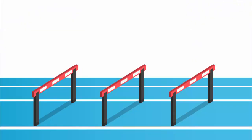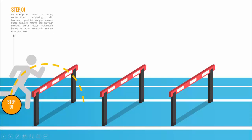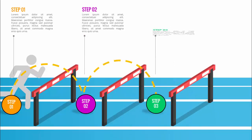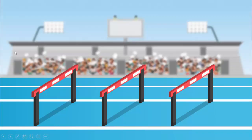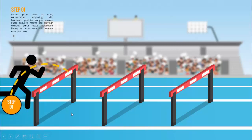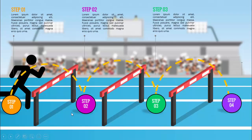In today's tutorial I'm going to show you how to make a hurdle race infographic slide in PowerPoint. This is the running track with three hurdles, and when I click you can see one icon added and then the first step will come where you can add your detailed text. On the next click it shows step two, then step three, and step four. I've also made one more slide with a different stadium background - again the same animation, clicking through steps one to four.